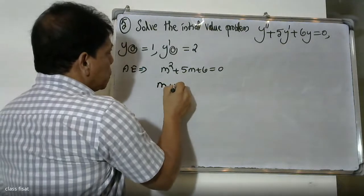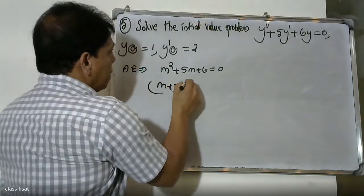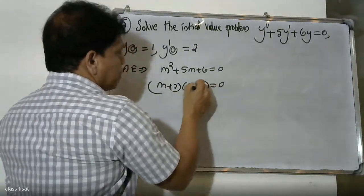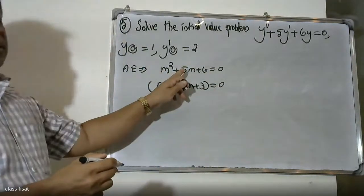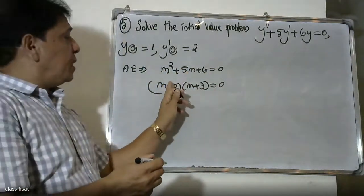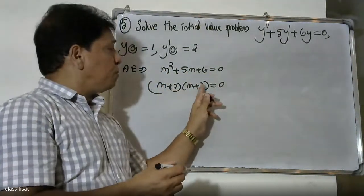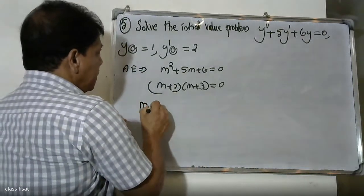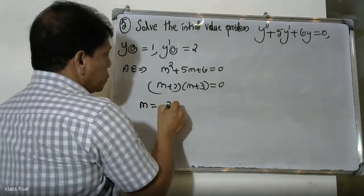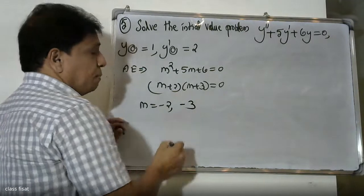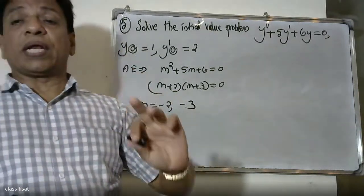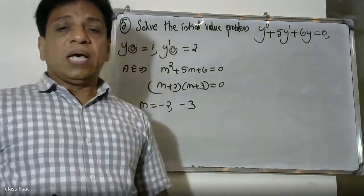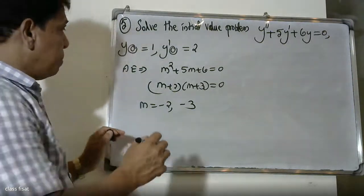We solve the auxiliary equation by factoring: m squared plus five m plus six equals (m plus two)(m plus three) equals zero. So m is equal to minus two and minus three — these are distinct real roots.